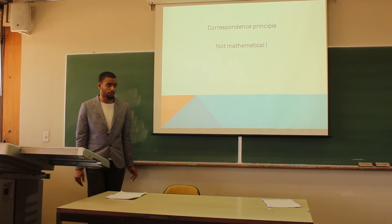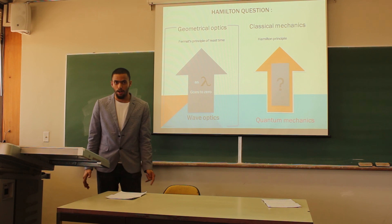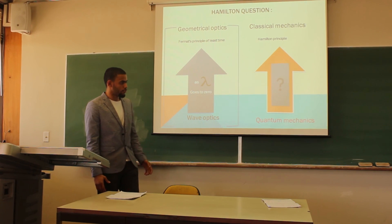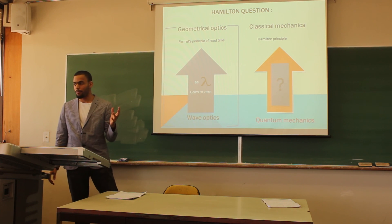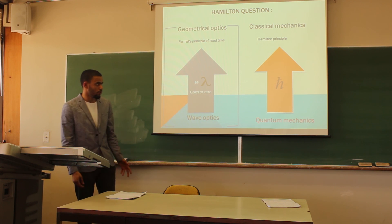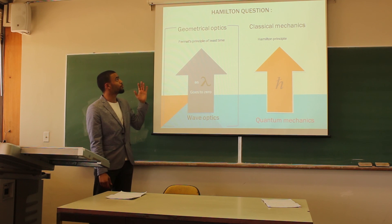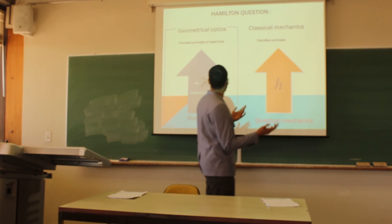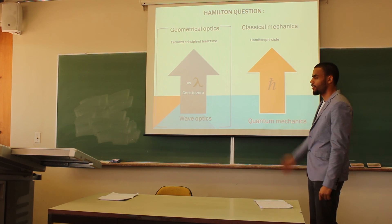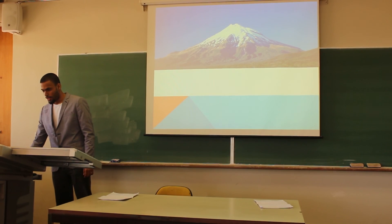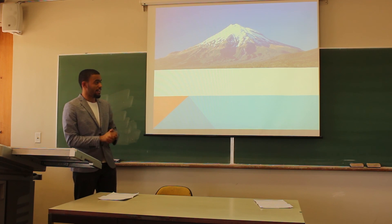The point worth mentioning here is that the correspondence principle is not a mathematical one. So, back to this picture — the masterpiece done by the path integral formalism, a novel of physics, is to show mathematically how this reduction of quantum mechanics into classical mechanics is being made. And the thing that has to go to some limit is simply H-bar. So we have this complete picture in which wave optics reduces to geometrical optics as lambda goes to zero, and since classical mechanics and geometrical optics are somehow similar, we also have quantum mechanics which reduces to classical mechanics in the case that H-bar goes to zero.